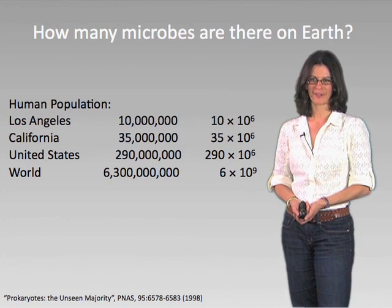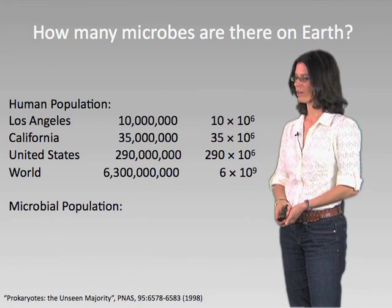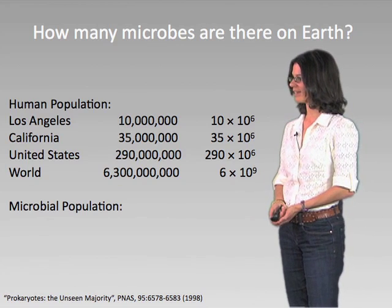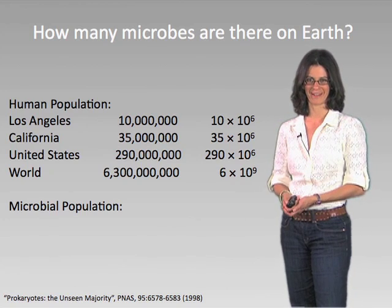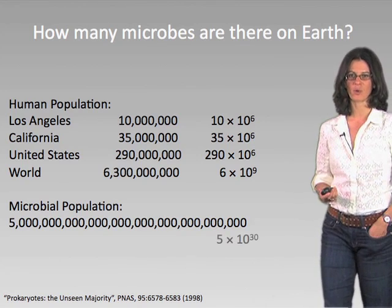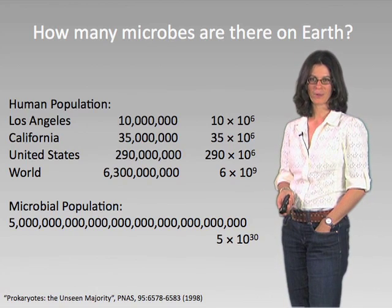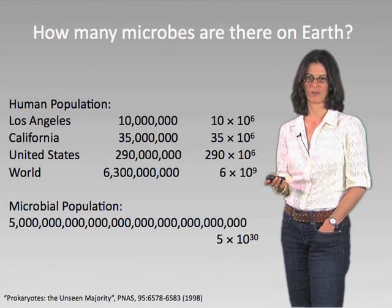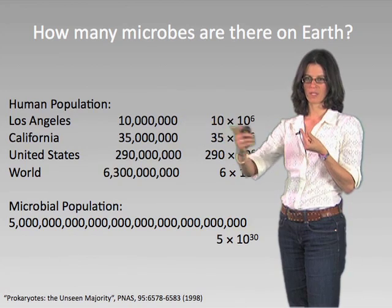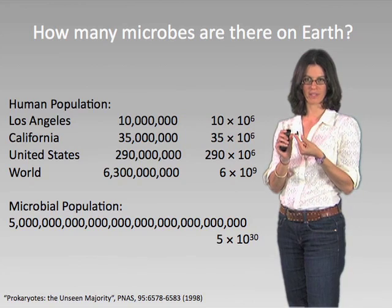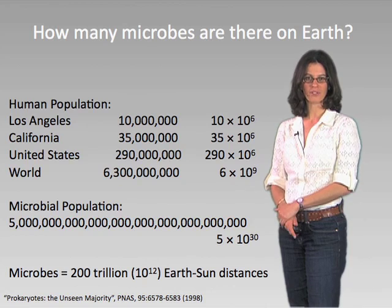That's a lot of folks. However, this is nothing in comparison to the microbial population. As estimated by a wonderful paper cited here at the bottom of this slide, called 'Prokaryotes the Unseen Majority,' published in PNAS in 1998 — these are very rough numbers, but the estimates for the microbial population are just enormous: five times ten to the thirtieth cells. To make this easier to grasp, I calculated that if you lined up all these organisms end to end, assuming one micron per organism, you would need to go back and forth between the Earth and the Sun 200 trillion times.